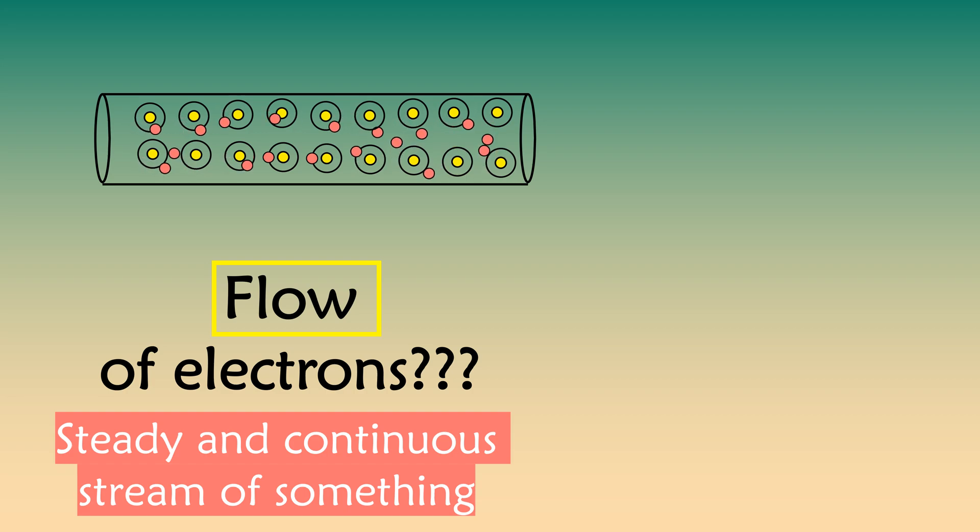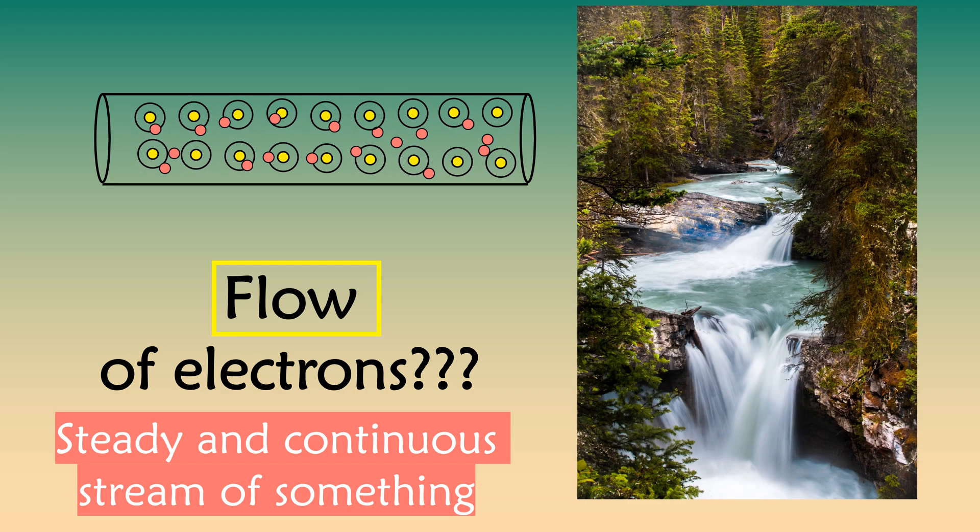For example, the flow of water into the pond. If you look carefully, the flow of water means water flowing in one direction. But here, the random movement of electrons is not in any particular direction.